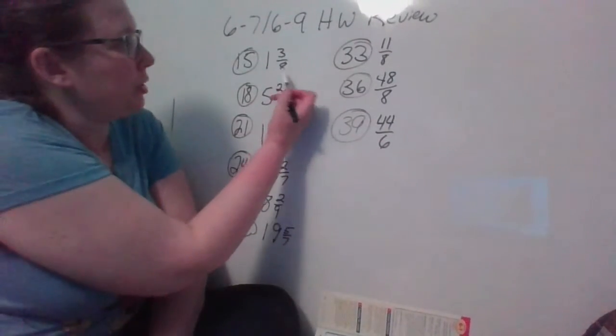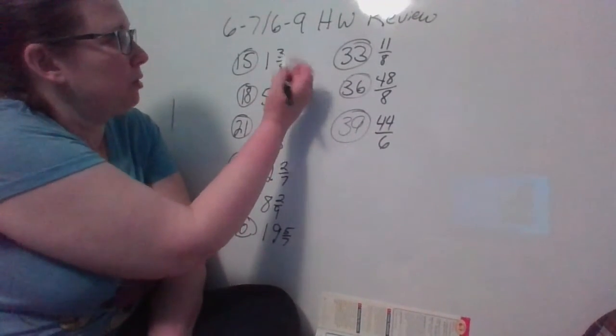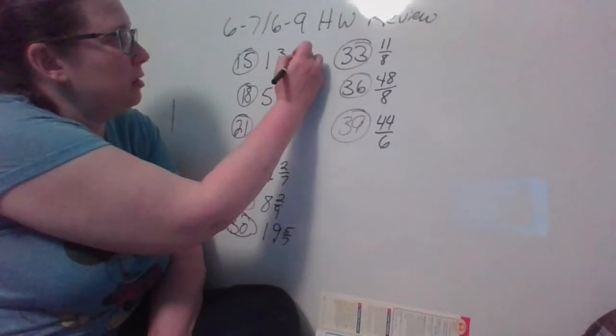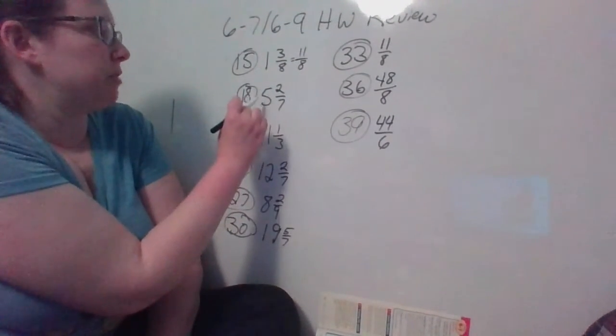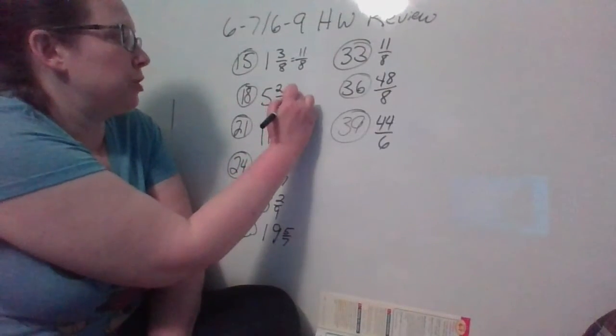So here we would do eight times one is eight, plus three more is eleven-eighths. Then we have seven times five is thirty-five, plus two more is thirty-seven sevenths.